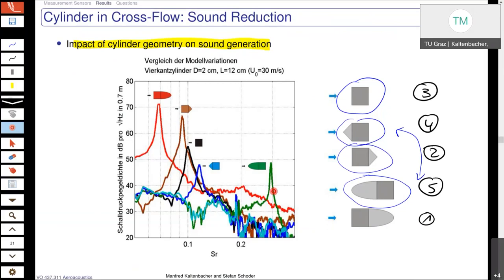We have the shedding frequencies — also the frequency we hear — but why is the frequency decreasing or increasing? What is our main dimensionless number in order to get this frequency?